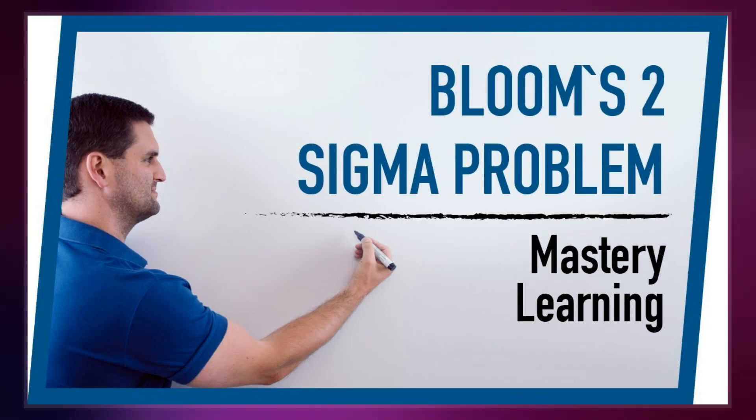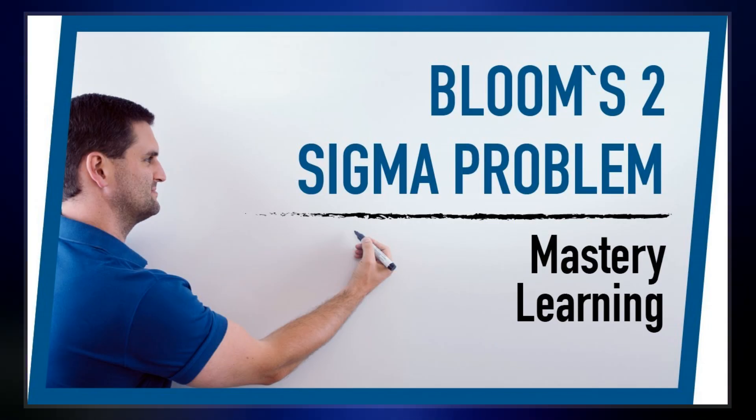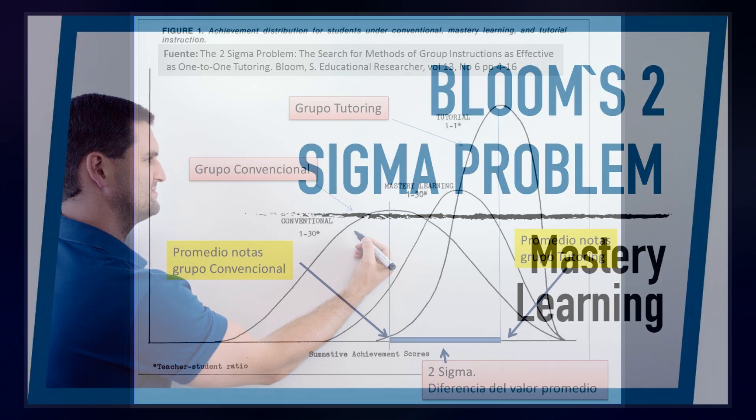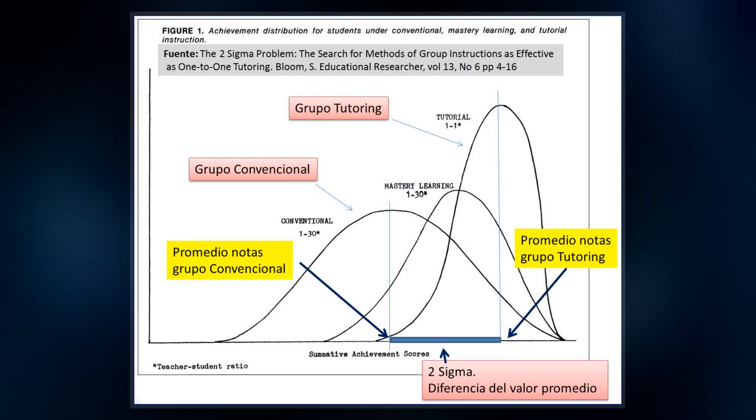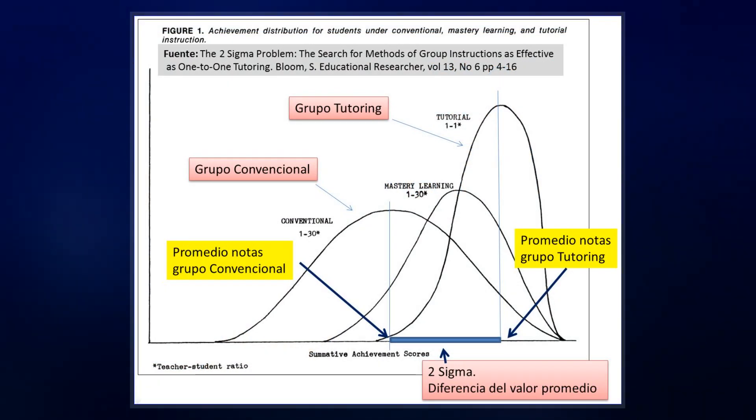Though Bloom concluded that one-to-one tutoring is too costly for most societies to bear on a large scale, he conjectured that a combination of two or three altered variables may result in a similar performance improvement.